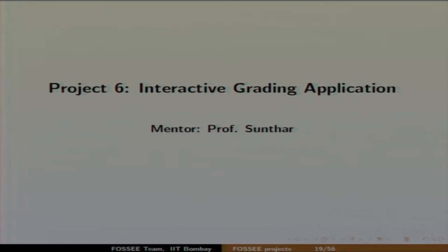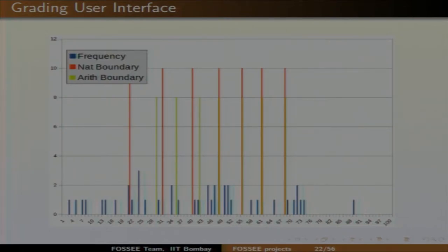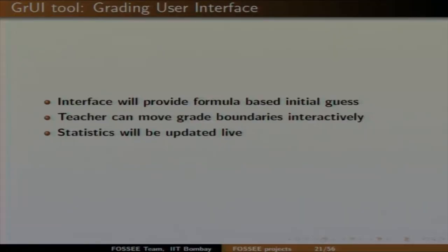The third project I am presenting is the interactive grading system, on behalf of Professor Sundar, who will be the mentor. The basic idea is that the current grading system is manual. Several autonomous institutions use letter grades for course grading based on formulas — for example, 75% above gets an A grade, then B, C, D. This should be an interactive tool where the teacher can dynamically change the parameters and the grades automatically update. For more details, you can directly contact Professor Sundar.